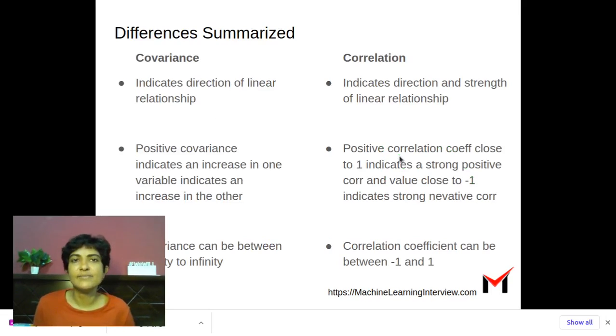To quickly summarize the differences between covariance and correlation, covariance indicates the direction of linear relationship, while correlation indicates the direction and strength of linear relationship. Positive covariance indicates increase in one variable indicates an increase in the other. Positive correlation also indicates the same. However, a positive correlation that is close to one indicates strong positive correlation, while that close to minus one indicates strong negative correlation. Covariance can be anywhere between minus infinity to infinity, while correlation is bounded between minus one and one.